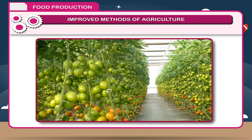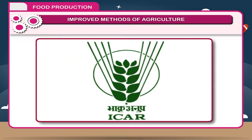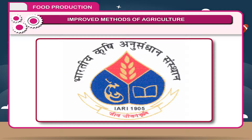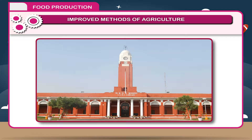The varieties have been improved at various research centers. Indian Council of Agricultural Research (ICAR), Indian Agricultural Research Institute (IARI), and various agricultural universities are the important centers for improvement of varieties.